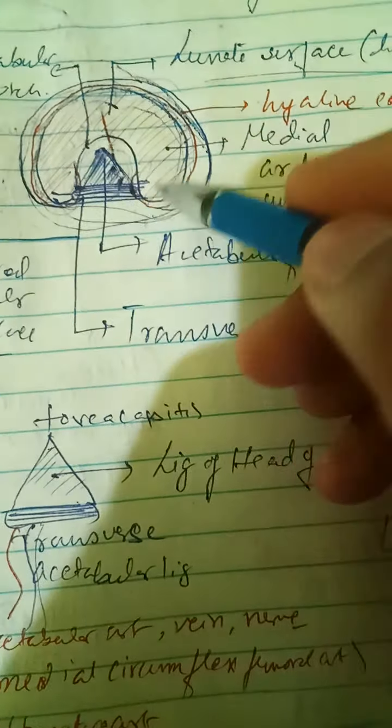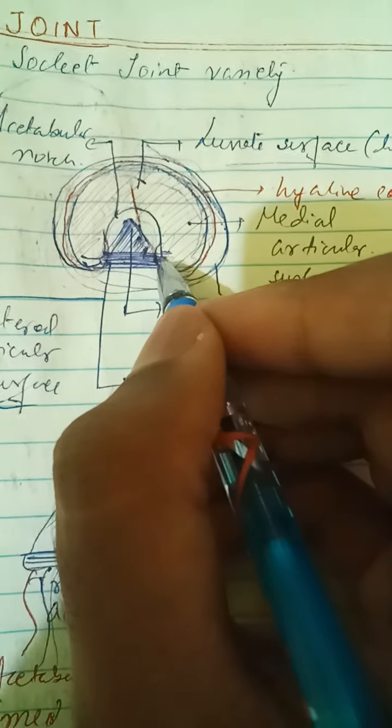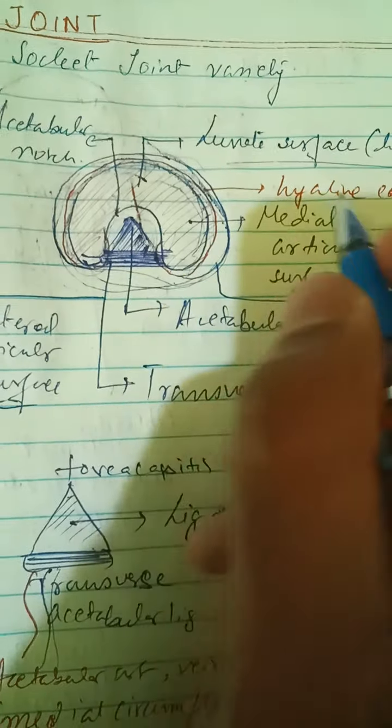Coming to the ligaments attached to the acetabular fossa: first, there is the transverse acetabular ligament, which runs between the two ends of the lunate surface. The transverse acetabular ligament is not a part of the hyaline cartilage — hyaline cartilage does not include this transverse ligament.